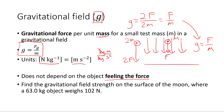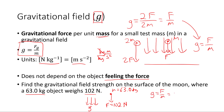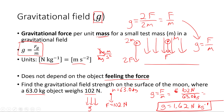Find the gravitational field strength on the surface of the moon where a 63.0 kg object weighs 102 newtons. We have a force of 102 newtons and a mass of 63.0 kilograms. Using g equals F over m: g equals 102 newtons over 63.0 kilograms, which gives g equals 1.62 newtons per kilogram. That's easy to calculate — force per unit mass on a test mass. That's also the gravitational acceleration on the moon: 1.62 meters per second squared.